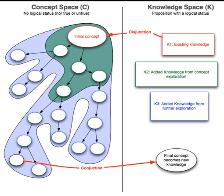CK design theory, or Concept-Knowledge theory, is both a design theory and a theory of reasoning in design. It defines design reasoning as a logic of expansion processes, i.e., a logic that organizes the generation of unknown objects. The theory builds on several traditions of design theory, including systematic design, axiomatic design, creativity theories, general and formal design theories, and artificial intelligence-based design models.